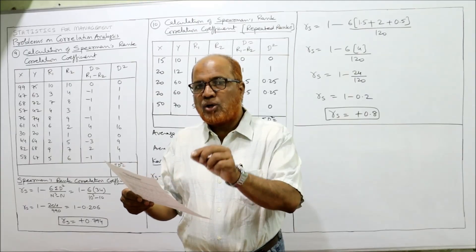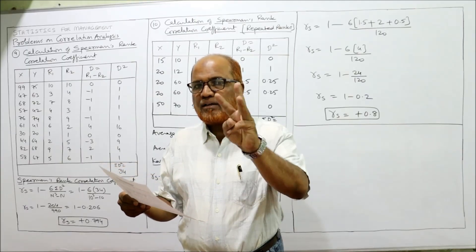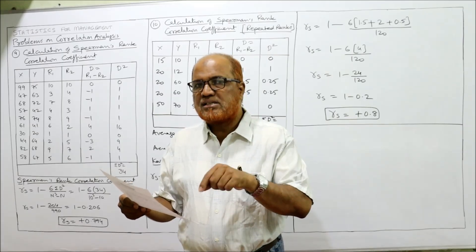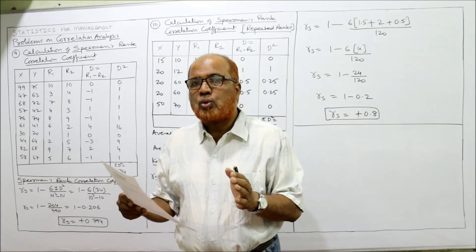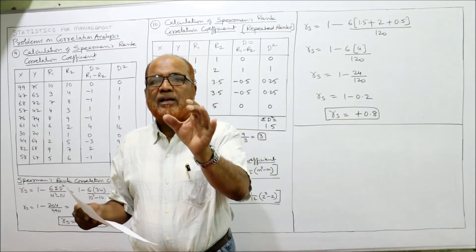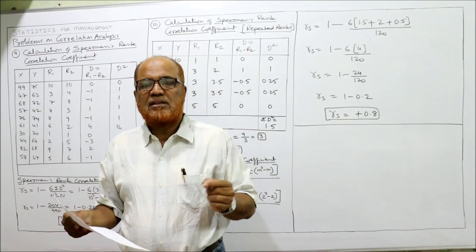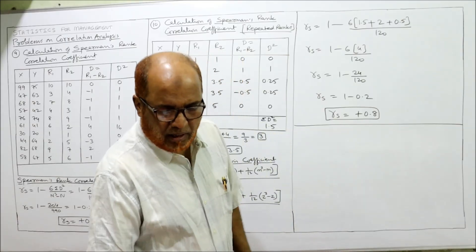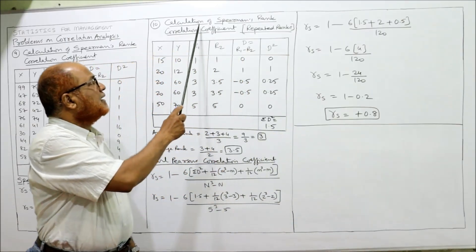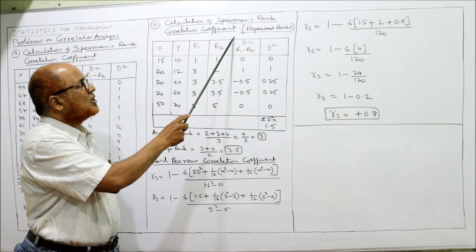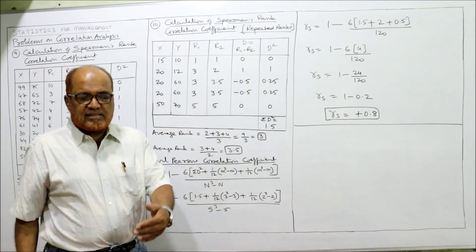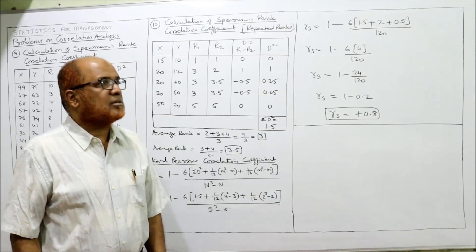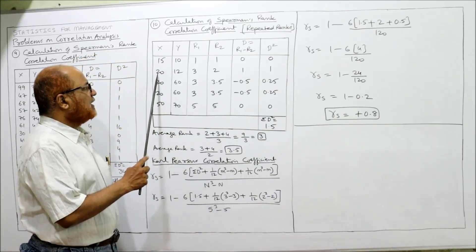In the X series, 20 is repeating 3 times. In the Y series, 60 is repeating 2 times. So two groups are formed — one group in X series and the other in Y series with the same repeated values. Now, for assigning ranks: the lowest value in the X series is 15, so 15 gets first rank.